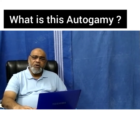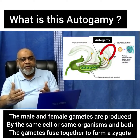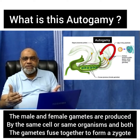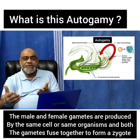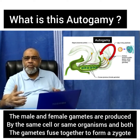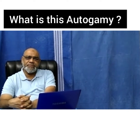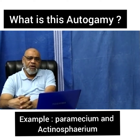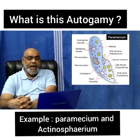What is autogamy? Here the male and the female gametes are produced by the same cell of the same organism, and both gametes fuse to form a zygote. Examples of autogamy are Paramecium and Actinosphaerium.